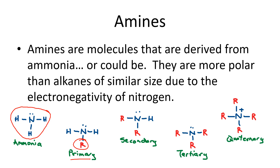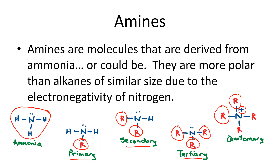If the nitrogen is between two other carbons — two other parts of the molecule — that's a secondary amine. If it's between three other carbons, that's a tertiary amine. Nitrogen can even get a charge and make a coordinate bond between four other components, making it a quaternary amine. So there are lots of options for amines.